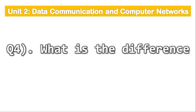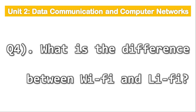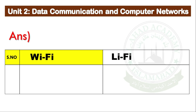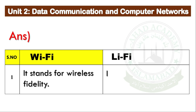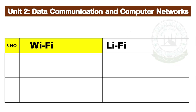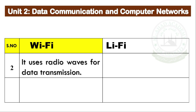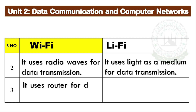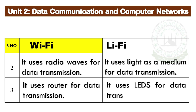Question number 4: What is the difference between Wi-Fi and Li-Fi? Wi-Fi stands for wireless fidelity; it uses radio waves for data transmission and uses a router for data transmission. Li-Fi stands for light fidelity; it uses light as a medium for data transmission and uses LEDs for data transmission.